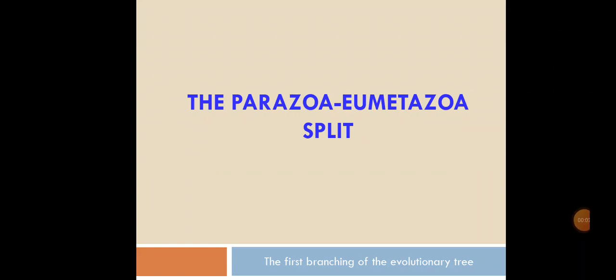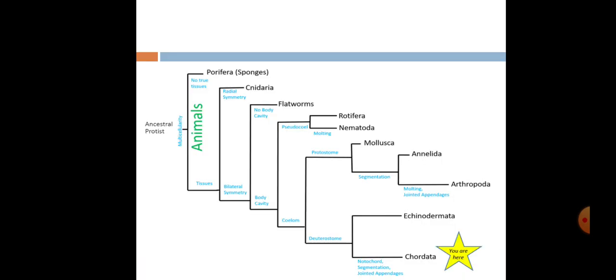Good day everyone. Today I'm going to look at the Parazoa-Eumetazoa split. 'Eu' means true. As you can see, animals started from ancestral protists. They were multicellular, and then they separated into animals which have no true tissues and other animals which have tissues. Animals with tissues divided into two groups: radial symmetry and bilateral symmetry.